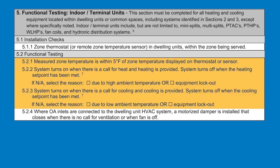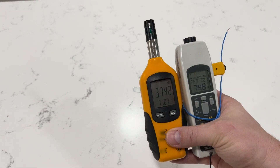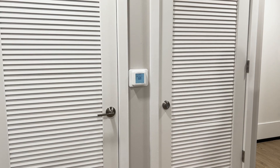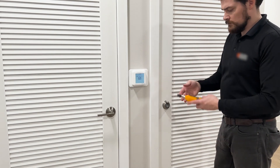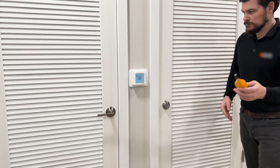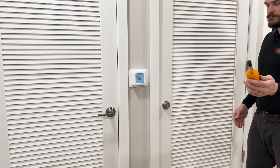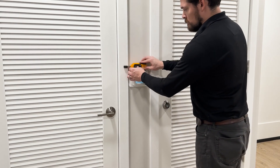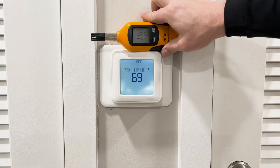For items 5.2.1 through 5.2.3, we are going to check that the thermostat is functioning correctly and measures the right temperature, and that it does indeed turn the unit on in both heating and cooling modes. To complete Section 5.2.1, we want equipment that is calibrated and can accurately measure the dry bulb temperature of the room, positioned about 4 feet above the floor, in the middle of the room, or near the thermostat or temperature measuring device.